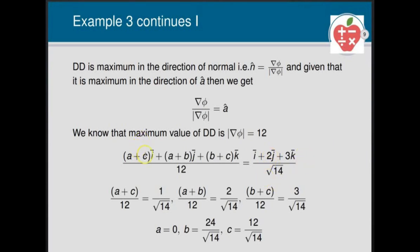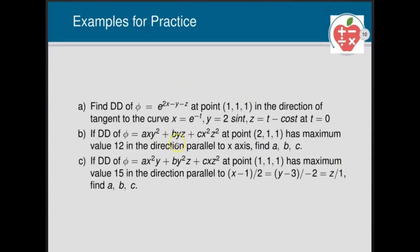Equating coefficients of i, j, k: (a+c)/12 = 1/√14, (a+b)/12 = 2/√14, and (b+c)/12 = 3/√14. Solving these equations: a = 0, b = 24/√14, and c = 12/√14. Practice these three examples at home. Thank you.